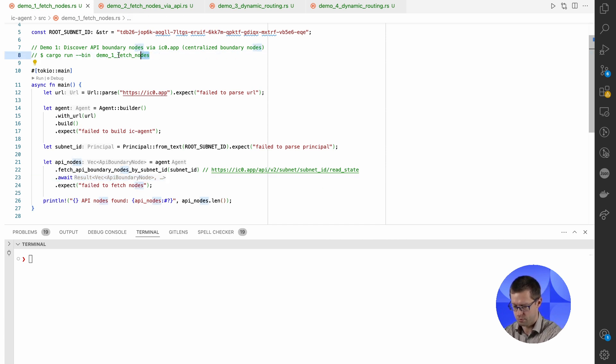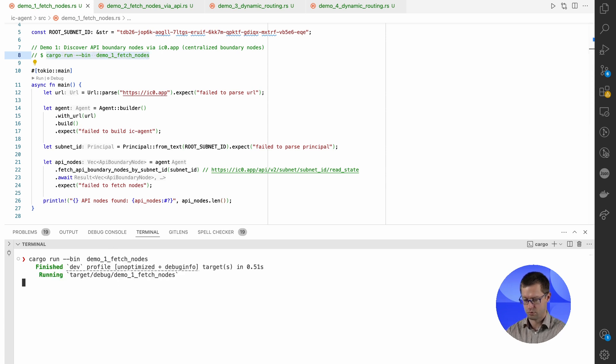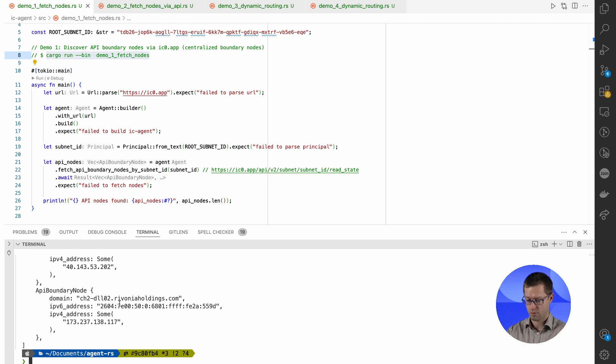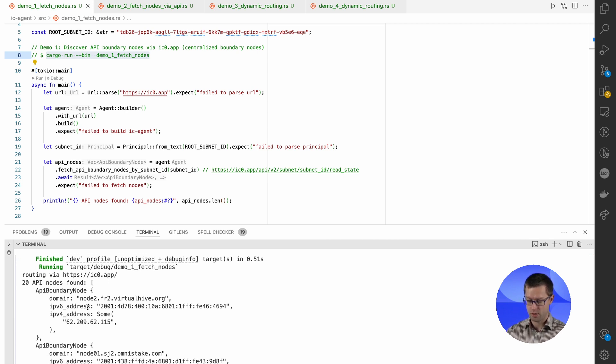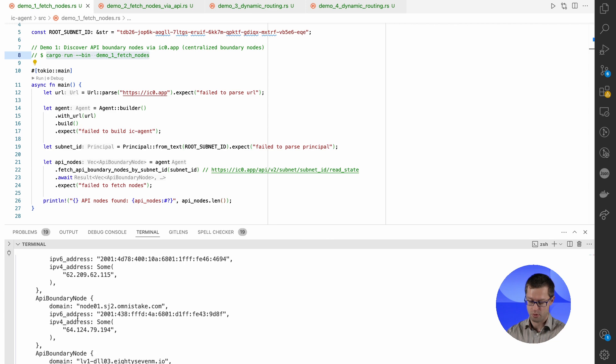As you can see, the request was indeed routed through ic0.app, meaning through centralized entities. And in response, we got 20 existing API boundary nodes, which are now part of the IC ecosystem. They all have their unique domain names, IPv6 addresses, and optional IPv4 addresses, which are also set for all of them.